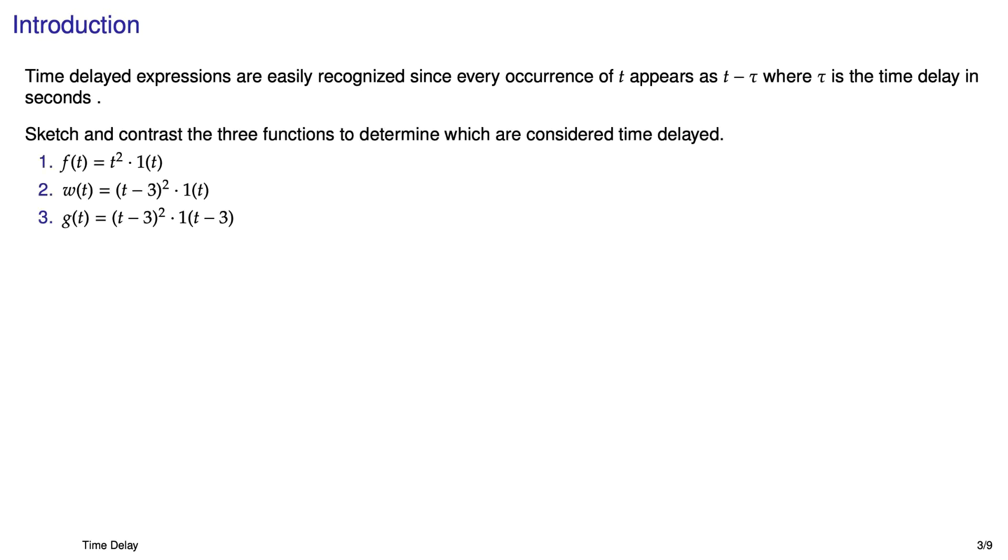We'll look at a few examples and these are all just parabolas where I've incorporated different shifts with the t minus 3 term. The first one is just a parabola multiplied by a step where the step has the effect of annihilating the function for negative time. The second one has the t squared replaced with t minus 3 squared and that certainly shifts the parabola over to the right by 3 seconds.